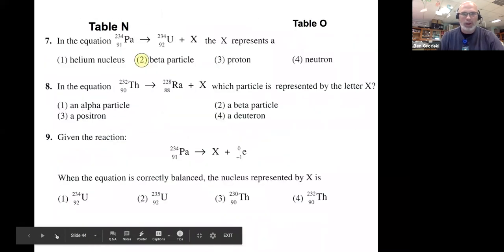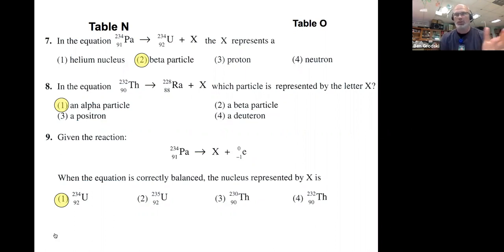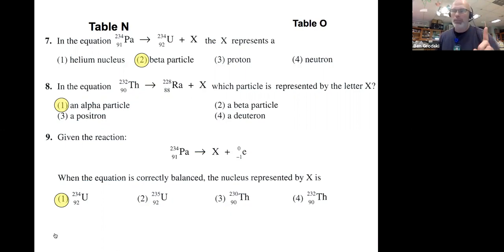Everything I've done up to this point, we've been talking about natural transmutation. Transmutation means a nucleus is changing into another nucleus. In natural transmutation — occurring in alpha, beta, gamma, and positron decay — these are natural events that are spontaneous as we move from an unstable nucleus to a more stable one. These are natural because they do not require the help of anything else — we're not inputting energy to make them happen.